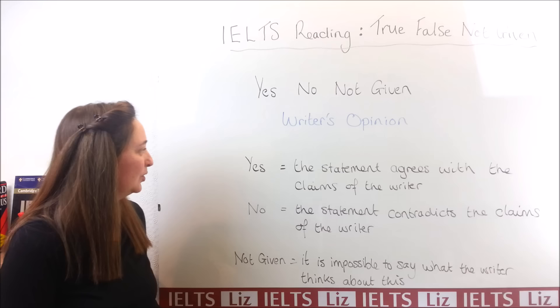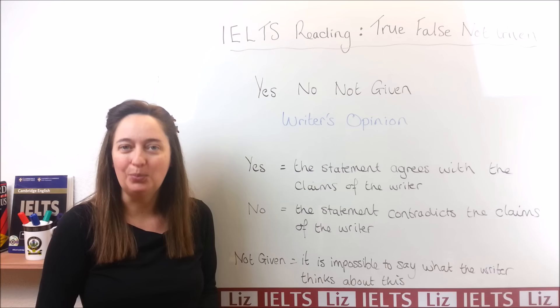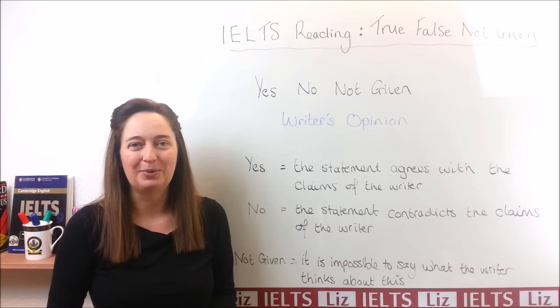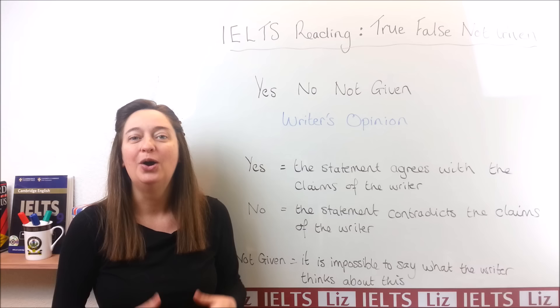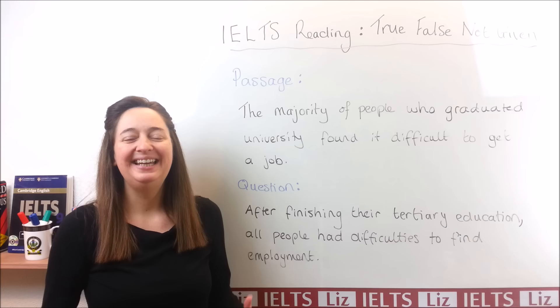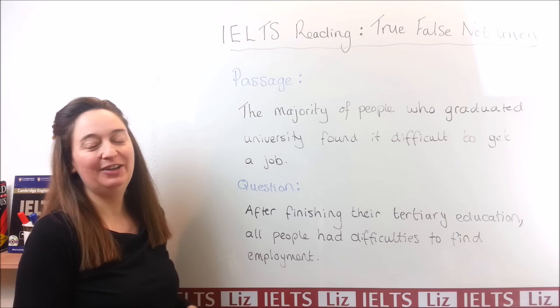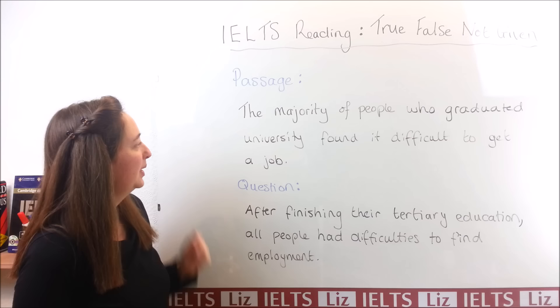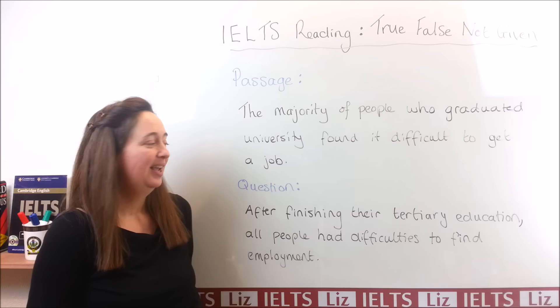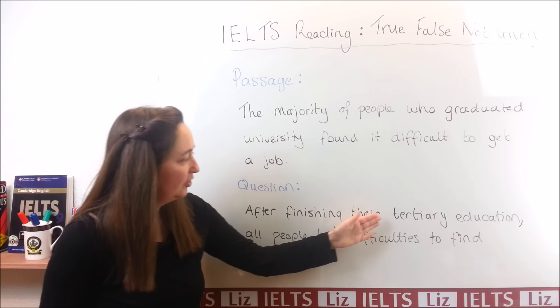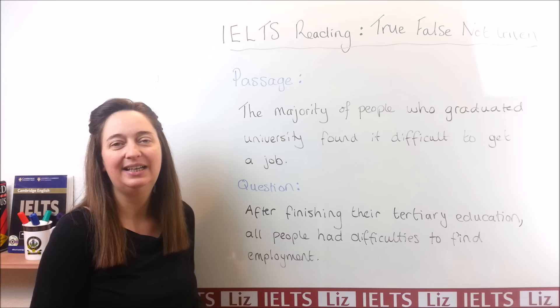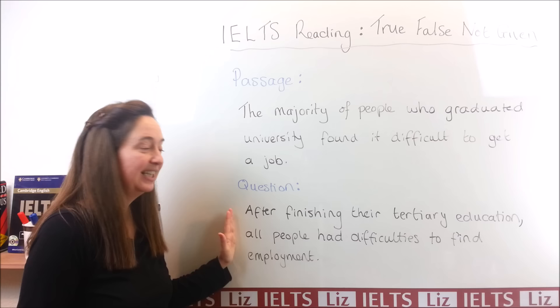Now let's have a look at some true, false, not given questions, and I will explain to you why the answers are true, false, or not given. Here is a typical example. This is the information in the reading passage: 'The majority of people who graduated university found it difficult to get a job.' And the statement in the question is: 'After finishing their tertiary education, all people had difficulties to find employment.' The first step is to look more closely at the statement — don't try to find your answer until you have analysed the statement more.